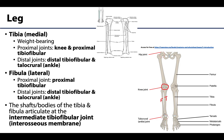Both the tibia and the fibula articulate in differing ways to the talus, one of the tarsal bones, to form the talocrural or ankle joint distally. You can palpate on the lateral side of your ankle and you will be feeling the fibula, whereas on the medial side you are feeling the tibia.